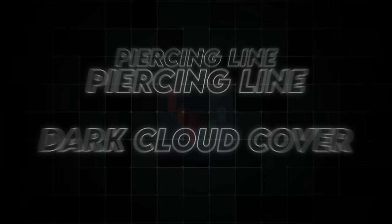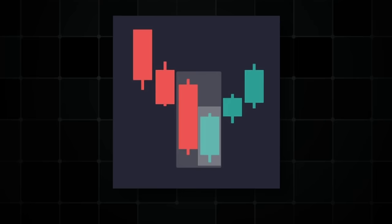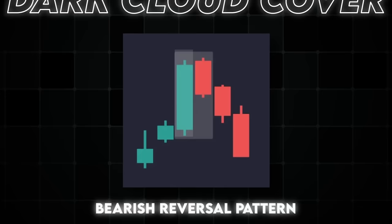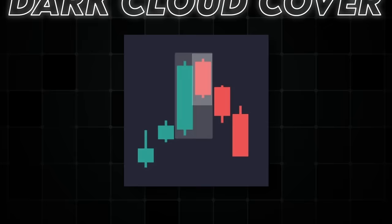Next we have the piercing line and the dark cloud cover. A piercing line is a bullish reversal pattern at the end of a downtrend, starting with a long red candle that opens lower but closes above the midpoint of the first candlestick's body. The dark cloud cover is pretty much the opposite — a bearish reversal pattern at the end of an uptrend, starting with a long green candle followed by a long red body that opens higher but closes below the midpoint of the first candlestick's body.